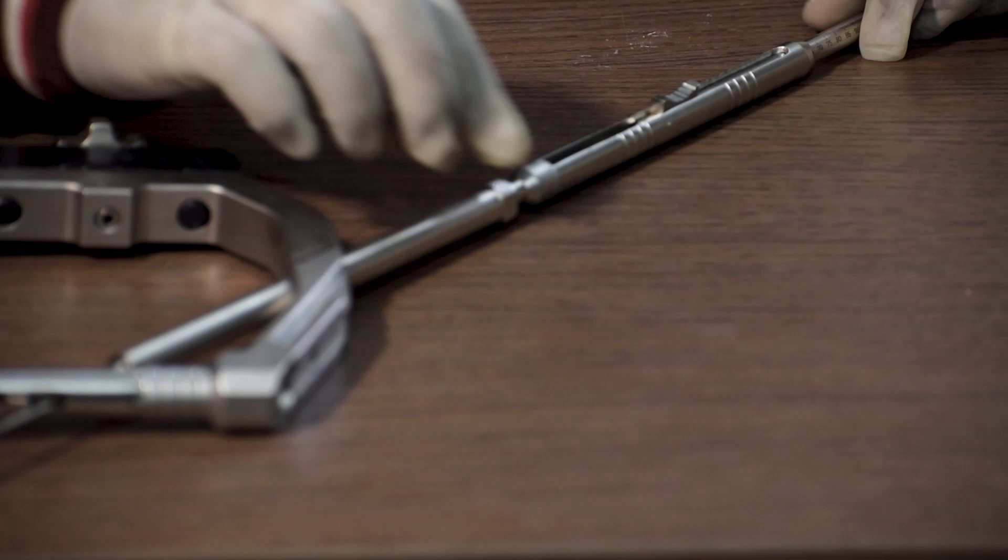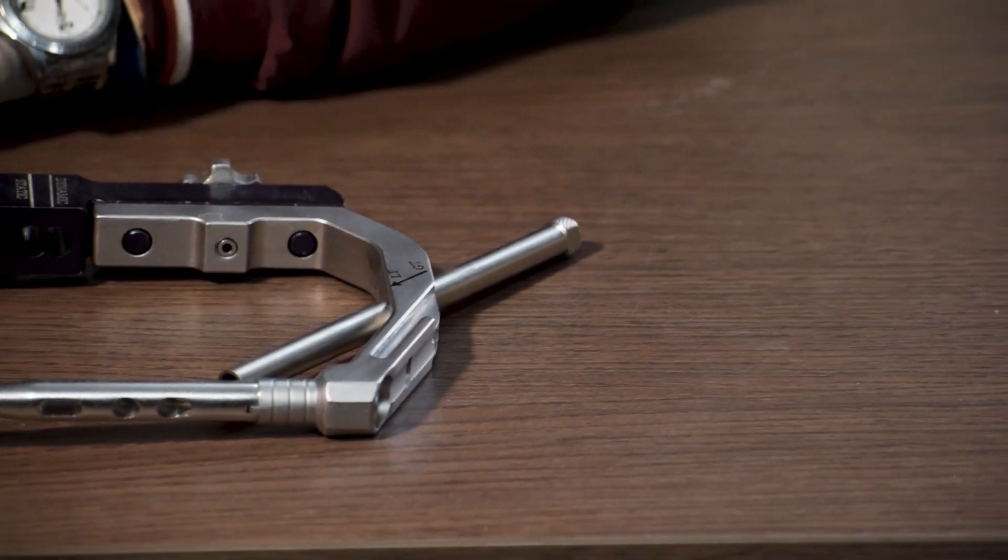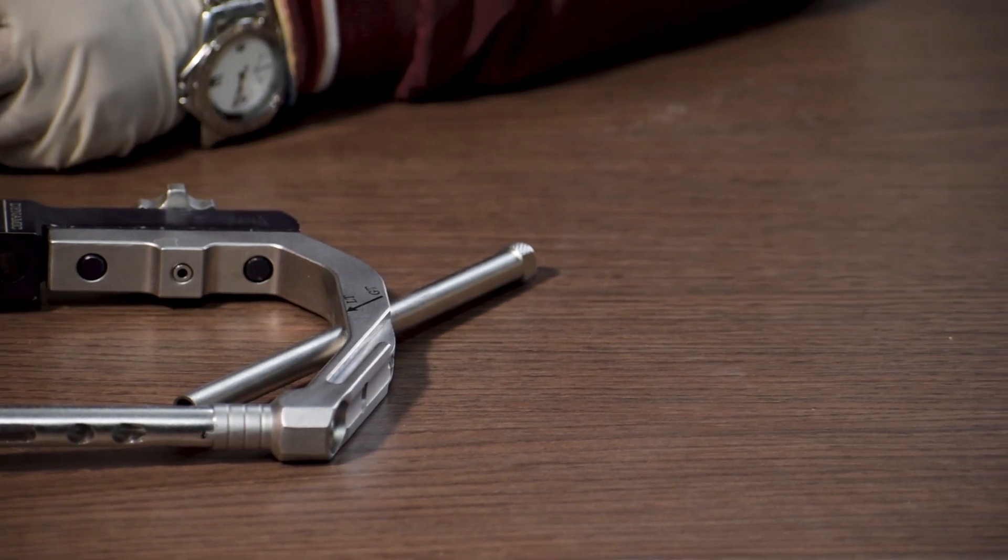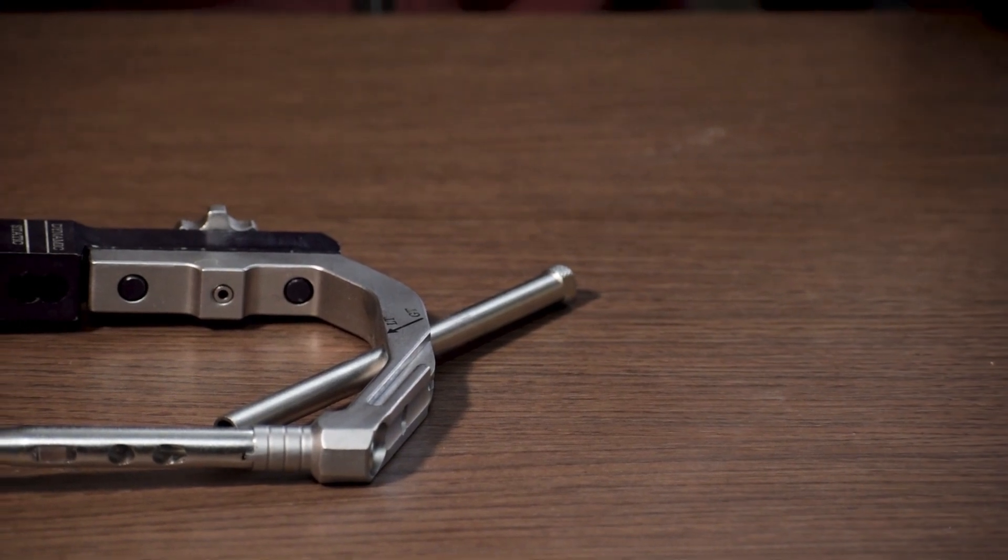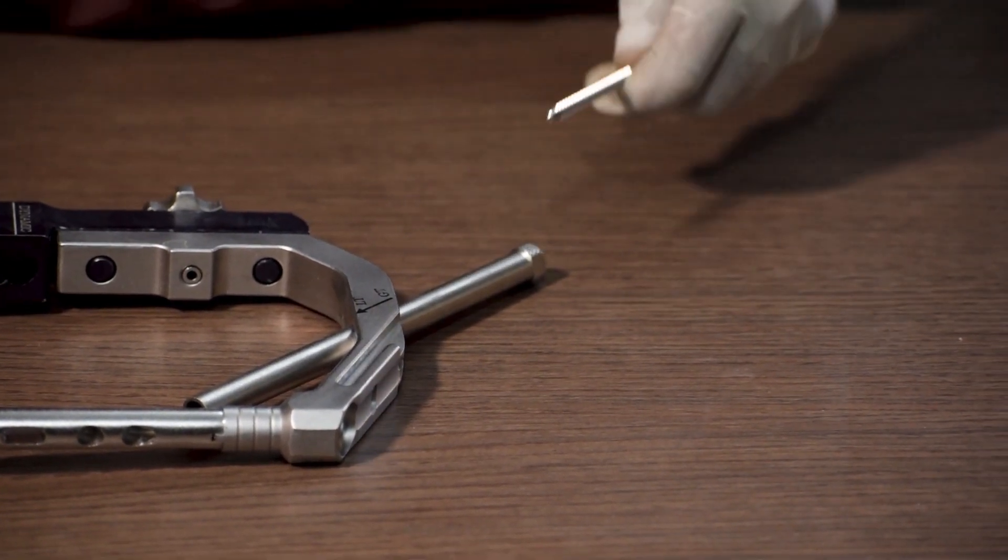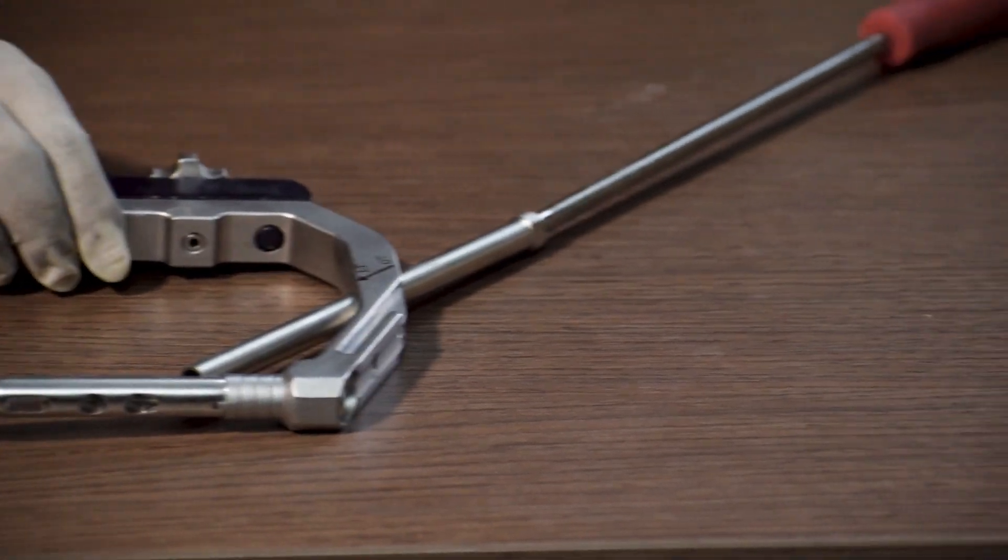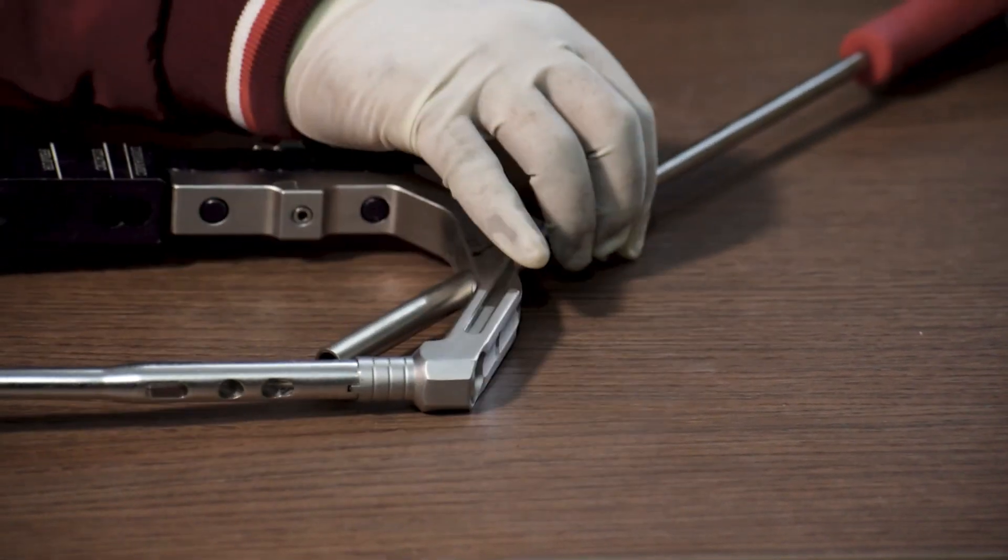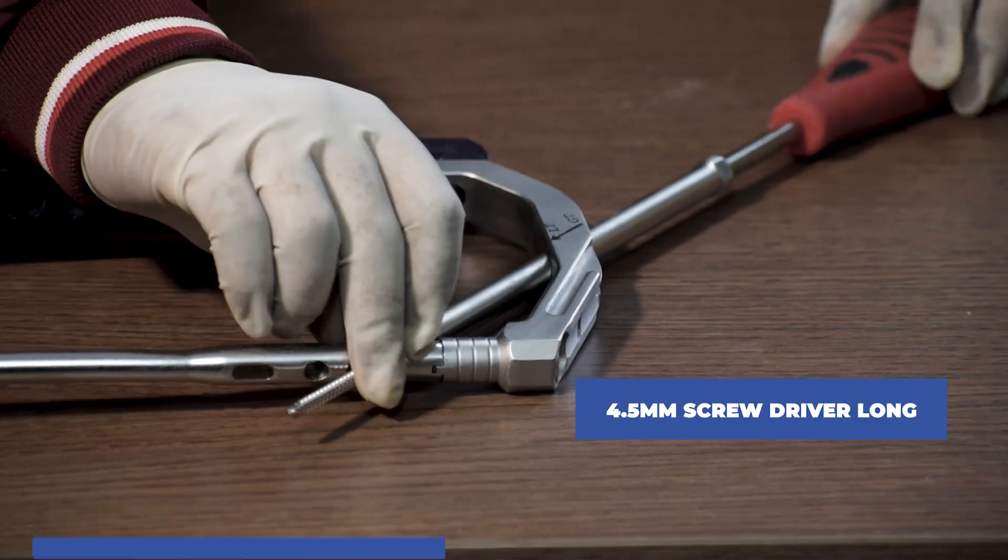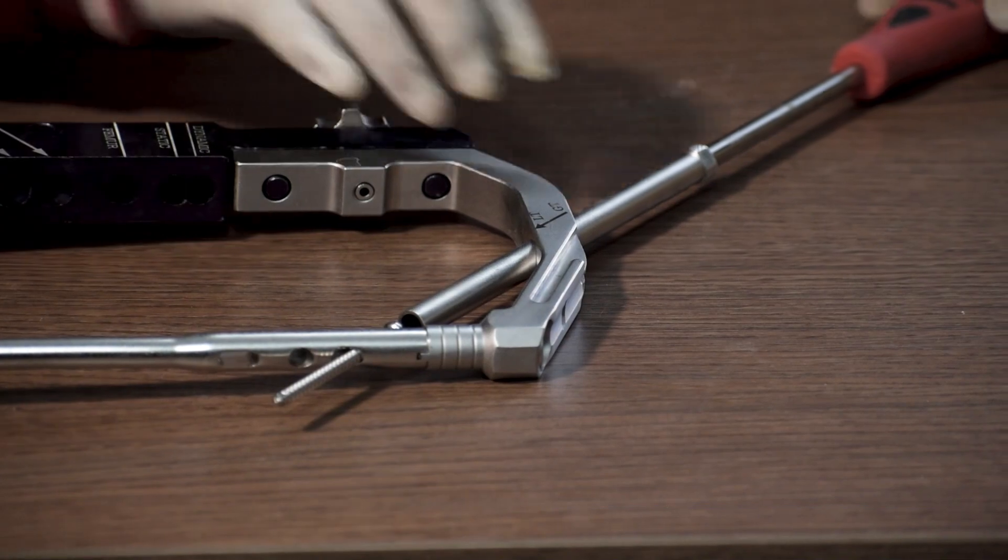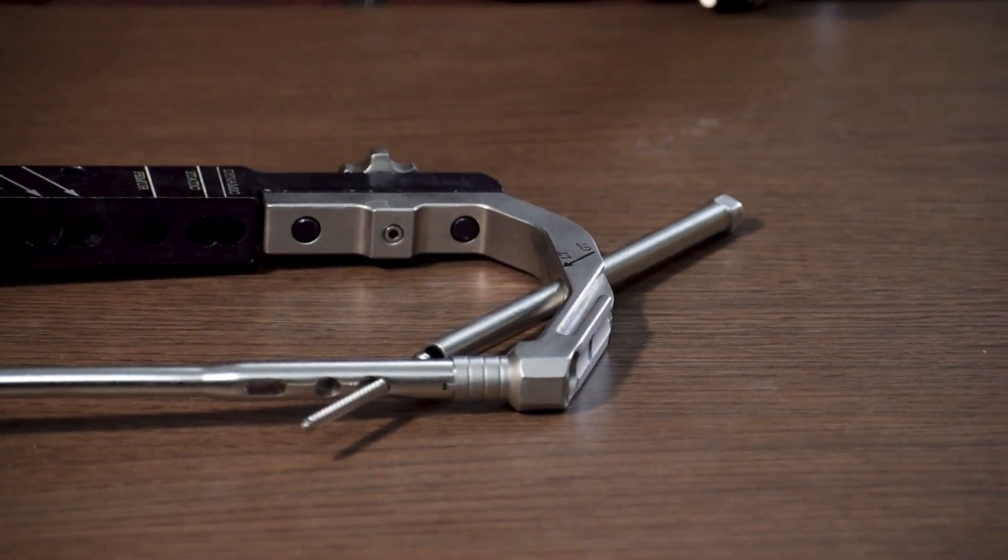Once the measurement is taken, we will remove the drill sleeve. Then we will fix a 4.9mm interlocking bolt with the help of a 4.5mm long screwdriver. Once the screw is fixed, we will also remove the protection sleeve from the jig.